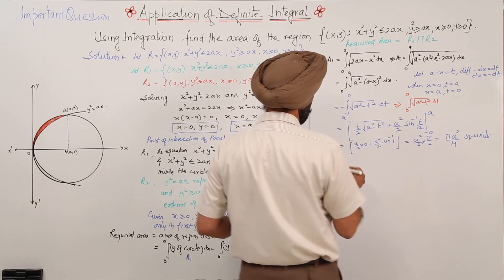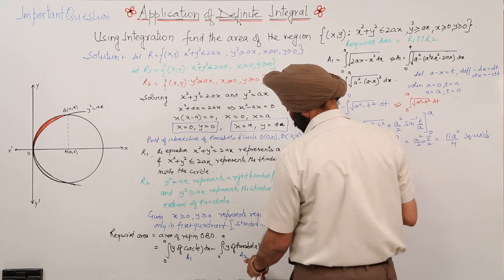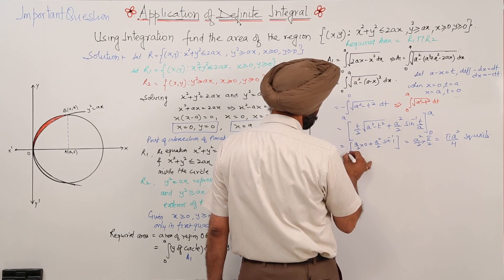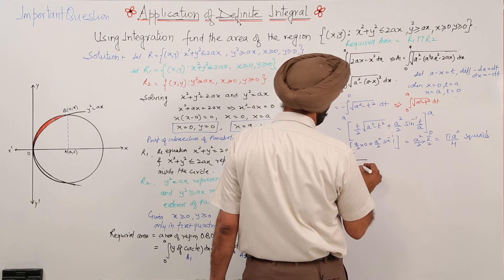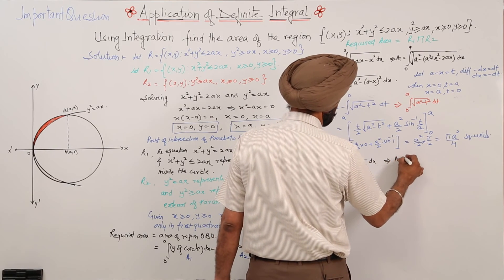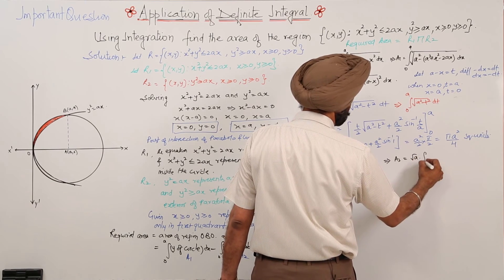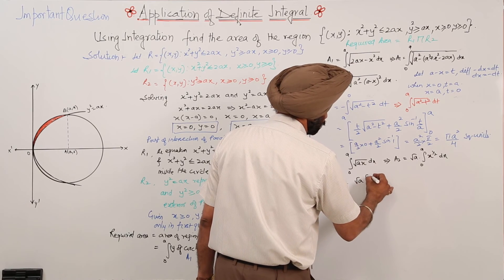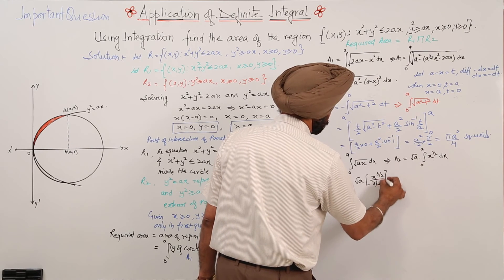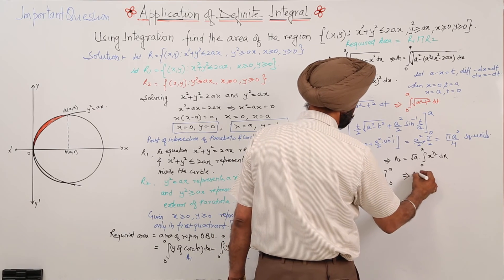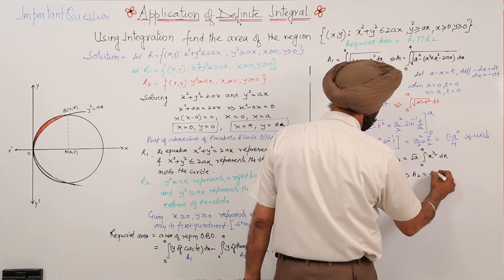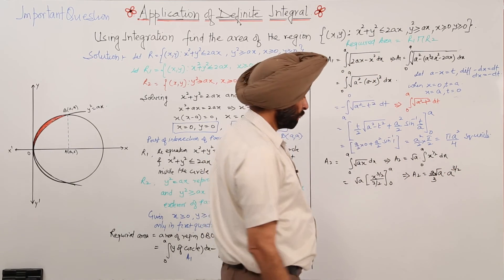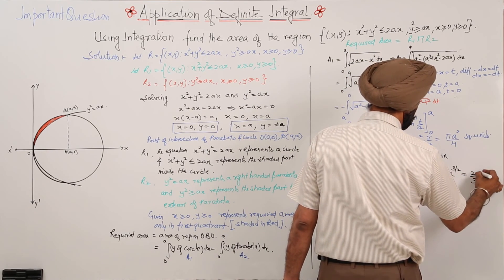Now for A2: A2 = integral from 0 to a of y_parabola dx = integral from 0 to a of √(ax) dx = √a · integral from 0 to a of x^(1/2) dx = √a · [x^(3/2) / (3/2)] from 0 to a = (2/3)√a · a^(3/2) = 2a²/3.